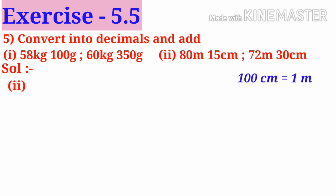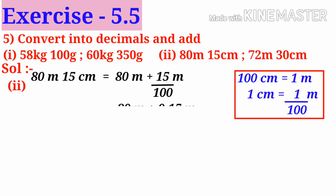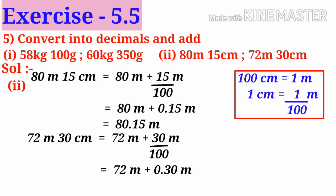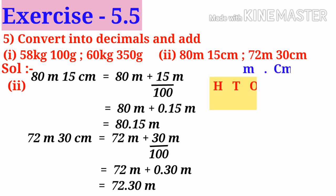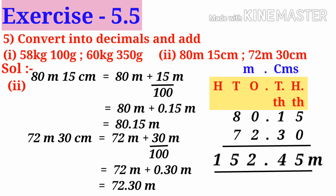Number 2: 100 centimeters makes 1 meter, so 1 centimeter is 1/100th of a meter. 80 meters 15 centimeters equals 80 + 0.15 = 80.15 meters. 72 meters 30 centimeters equals 72 + 0.30 = 72.30 meters. Place in exact values and add: 80.15 plus 72.30 equals 152.45 meters.